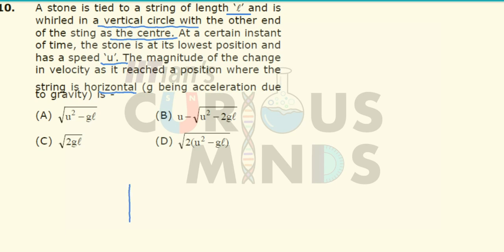If I attach a stone at the bottom, its velocity is equal to U, which will be in this direction. After a certain point, the velocity will be in this direction — tangential to the length of the string. So we have to calculate the magnitude of the change in velocity when it reaches the horizontal position.